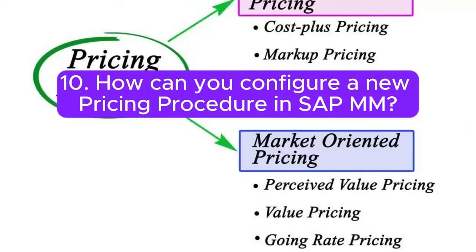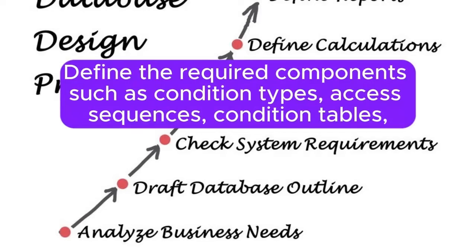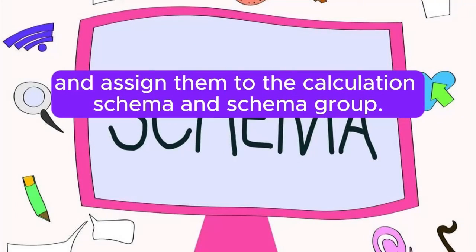Question 10: How can you configure a new pricing procedure in SAP MM? Answer: To configure a new pricing procedure, use the transaction code SPRO in the SAP IMG menu. Define the required components such as condition types, access sequences, condition tables, and assign them to the calculation schema and schema group.